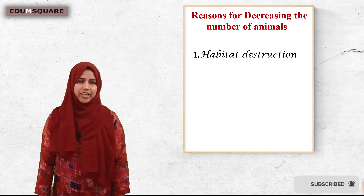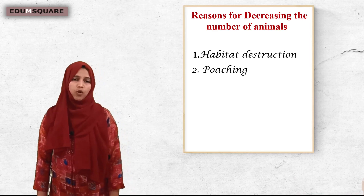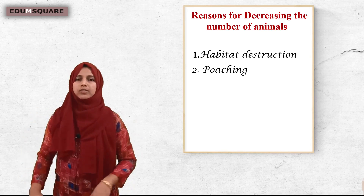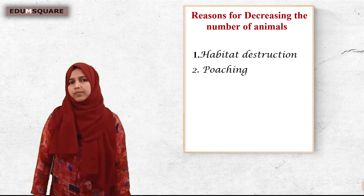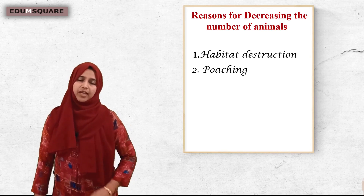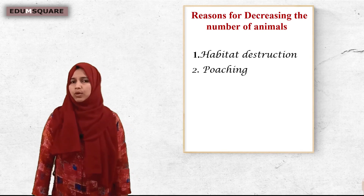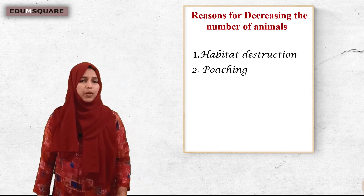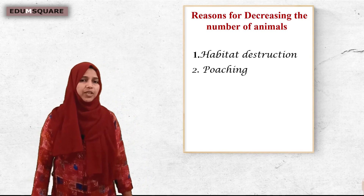The second reason is poaching — the illegal hunting of animals for their skin, horns, teeth, etc. Human beings are killing animals excessively to sell their skin, teeth, or horns. So the number of animals decreases because of this excessive killing.